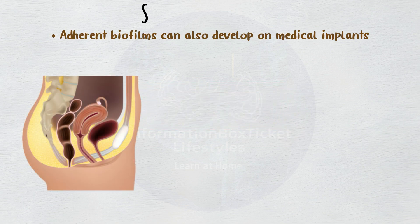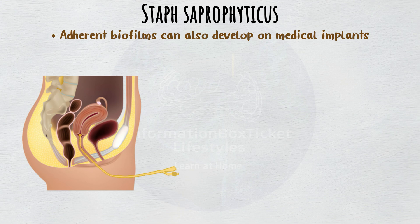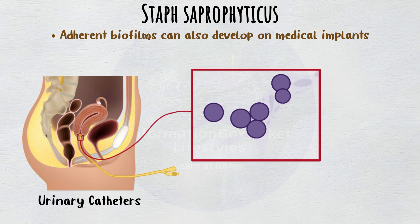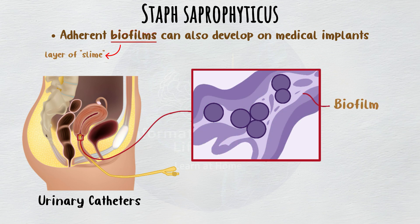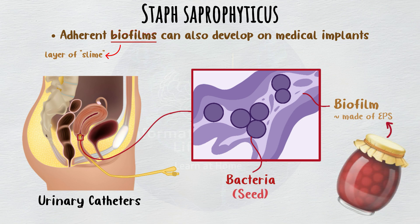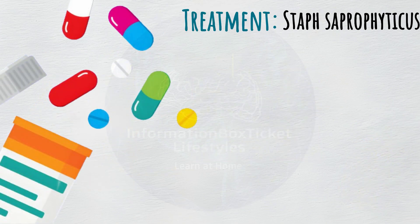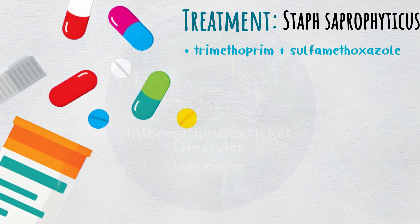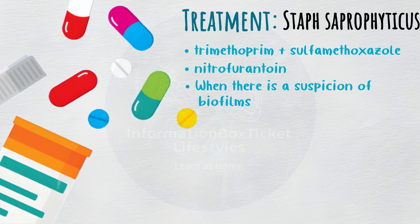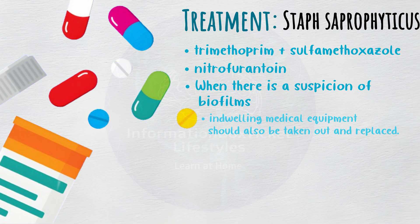Adherent biofilms of Staph saprophyticus can also develop on medical implants, most commonly on urinary catheters. A biofilm is a layer of slime composed of exopolysaccharides, or EPS, in which Staph saprophyticus thrives — the bacteria are like seeds in the EPS jam. Antibiotics are more difficult to reach bacteria covered in biofilms, making treatment more challenging. Treatment options include trimethoprim-sulfamethoxazole combination as well as nitrofurantoin. When biofilms are suspected, indwelling medical equipment should also be removed and replaced.